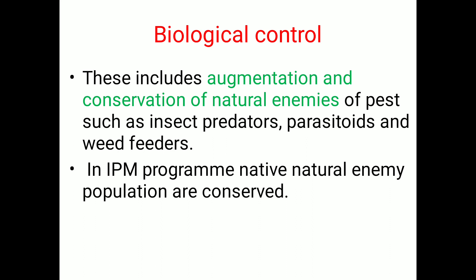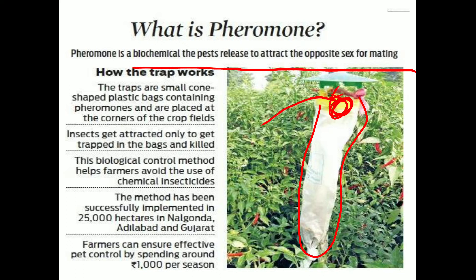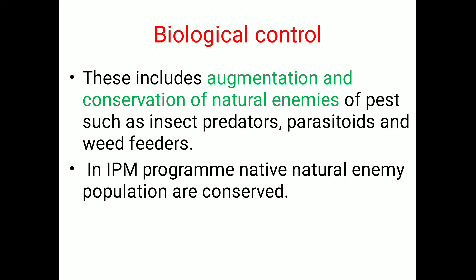To revisit — a pheromone is a biochemical that the pest releases to attract the opposite sex for mating. In the trap, one lure or chemical is placed; the smell of that chemical attracts the male insect towards it. Once they enter inside the trap they are caught at the bottom and are not able to fly away. Different lures or pheromones are used according to the different pests — for example, Heli-lure is used for the attraction of Helicoverpa.